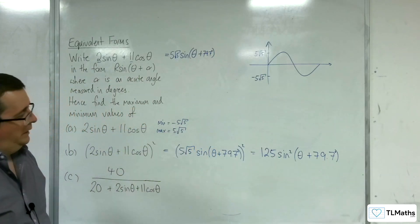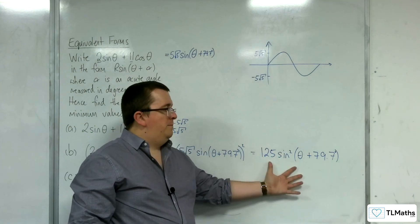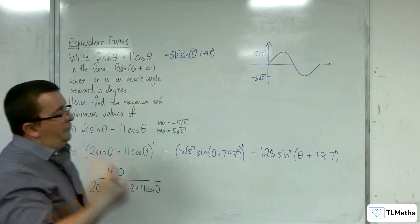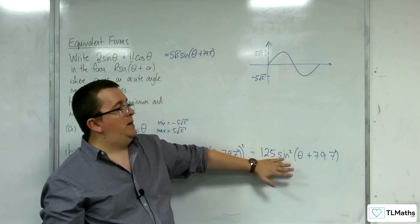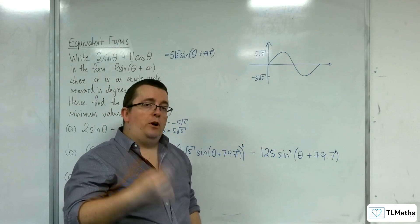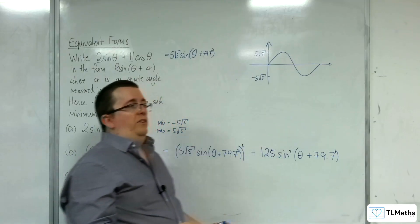Now, what's the maximum minimum values of that? Well, the sine squared, we know that sine went between minus 1 and 1. If you're squaring that, minus 1 squared is 1. 1 squared is 1.